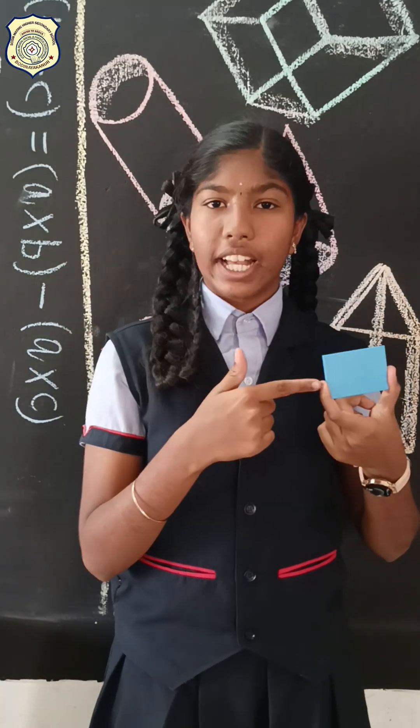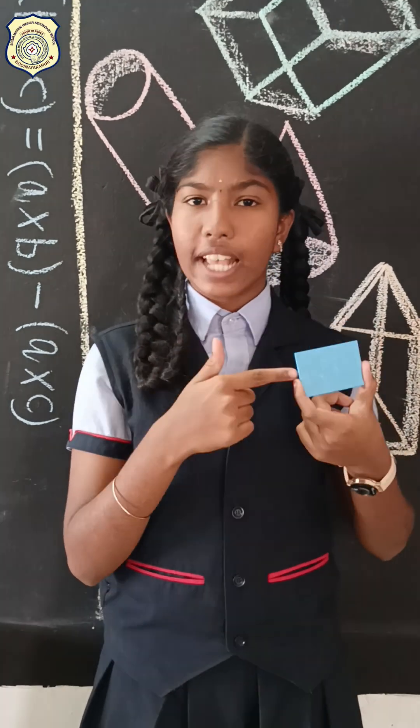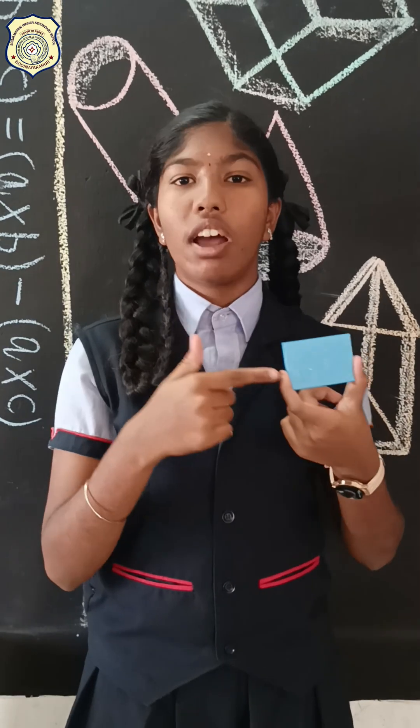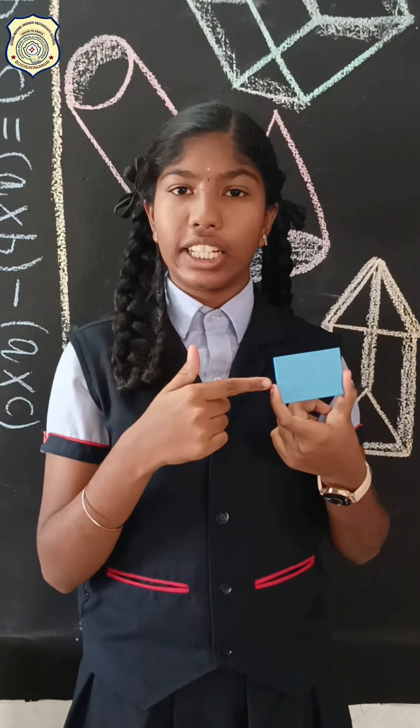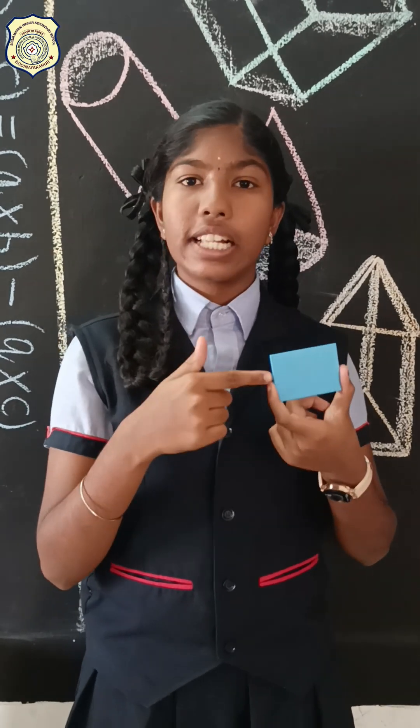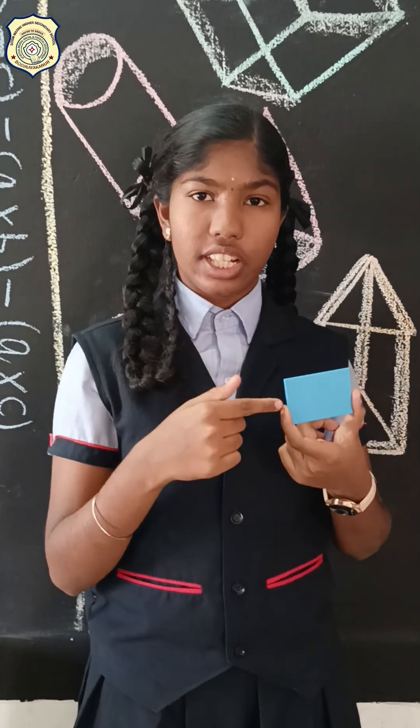This is a rectangle. Opposite sides are equal, all angles are 90 degrees, diagonals are equal, and diagonals bisect each other.